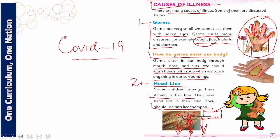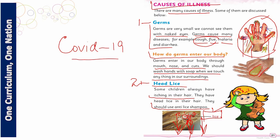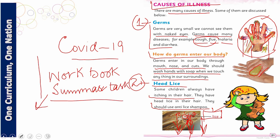My dear students, in today's session you read three main topics: the SLOs, the signs of illness, and the causes of illness — which included germs and head lice. Now please complete the activities in your workbook along with your summer task. I am confident that with what you learned today, you can easily solve all related activities. Show your teachers the work you did at home and make them proud. Best of luck, my dear students. Allah Hafiz.